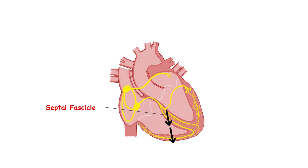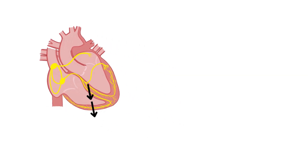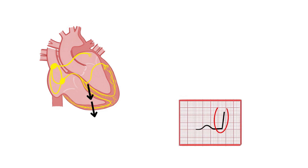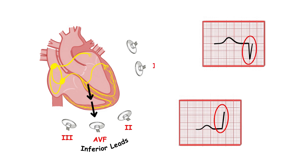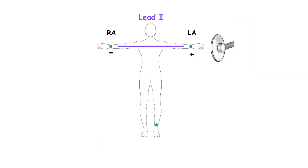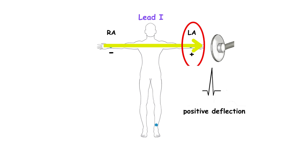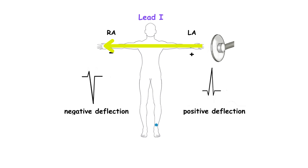That's why on the ECG it is going to be recorded as an initial small positive wave in the inferior leads, which are lead 2, 3, and AVF. And because it moves in opposite direction from the lateral leads, it is going to be recorded as a small Q wave in lead 1 and lead AVL. Quick recap: the depolarization wave moving towards the positive electrodes gives a positive deflection on the ECG, and moving away from the positive electrodes gives a negative deflection.